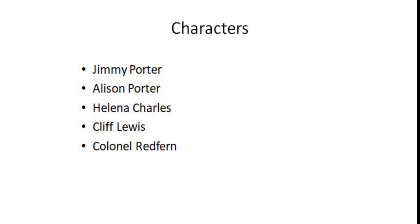The second character is Alison Porter. Alison Porter is the wife of Jimmy Porter. She belongs to the upper class but married Jimmy, who belongs to the working class. Alison eventually leaves Jimmy because of his destructive anger. After her child miscarriage, she returns to Jimmy.